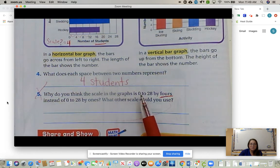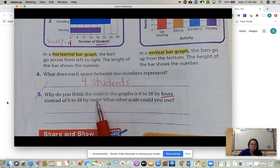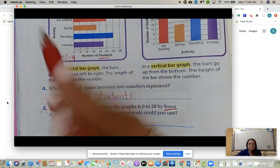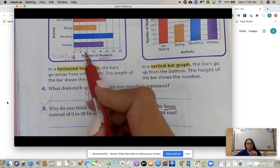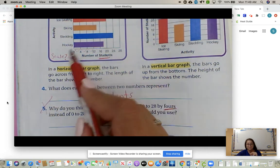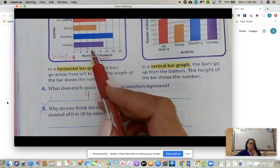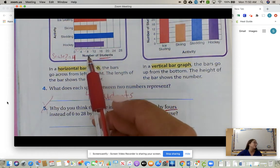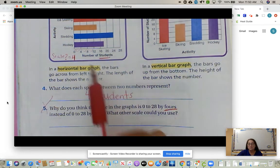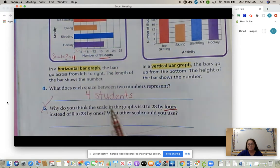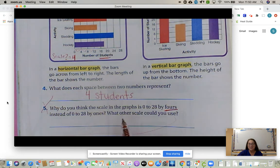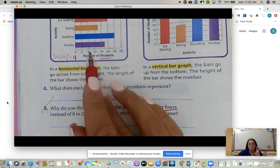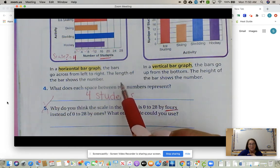Number five: why do you think the scale in the graph is 0 to 28 by fours instead of 0 to 28 by ones? What other scale could you use? Why did they not do scales by one, which means it would just be 0, 1, 2, 3, 4, 5, 6, 7, 8, all the way to 28? They would write the numbers in instead of skip counting by fours. Well, we discussed it and it's because our graph would be so long. We want it to fit on the page and it would take so long. No one would be doing any bar graphs if we didn't have a scale. That's why we have a scale, so we can make a small picture and get straight to the point. Another scale we could use is by twos because you can skip count by twos and you will hit all these numbers evenly.